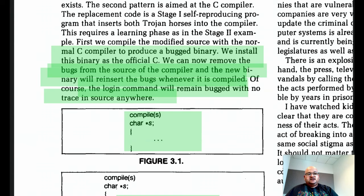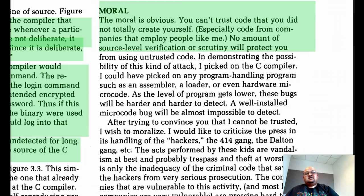The moral of this entire exercise was to point out how shaky the foundations of our trusted computing base are. That you can't really trust code that you did not completely create yourself. Thompson used the C compiler as an example, but he could have carried out the same attack using the same principles on any other program, which compiles or executes other programs, such as an assembler, a loader, or even microcode on the hardware.